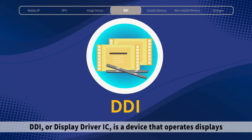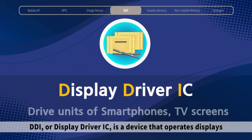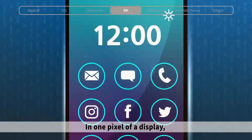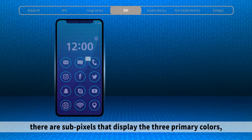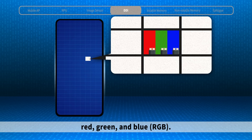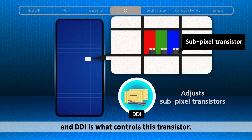DDI, or Display Driver IC, is a device that operates displays like LCD and other similar devices. In one pixel of a display, there are sub-pixels that display the three primary colors — red, green, and blue. Every sub-pixel has a transistor, and DDI is what controls this transistor.